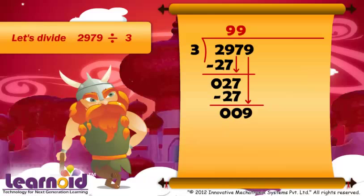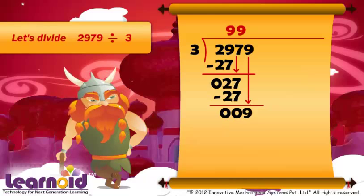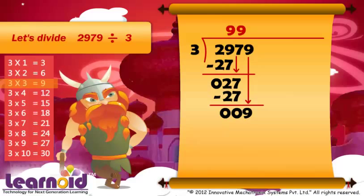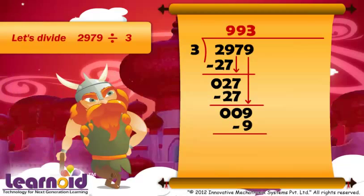We have the number 9. Now again 3 into 3 is 9. We write 9 below 9 and subtract 9 with 9. We got remainder 0.